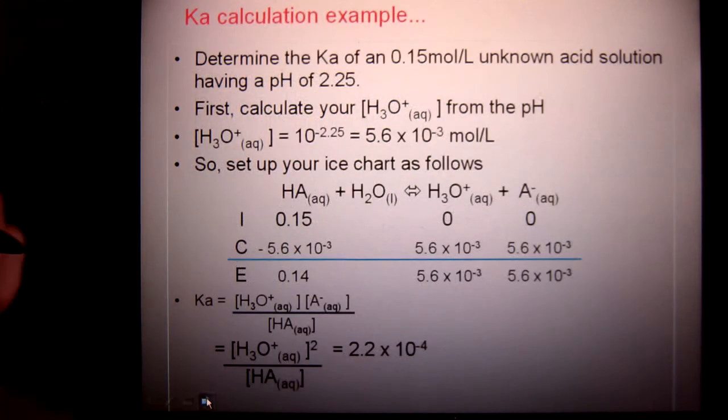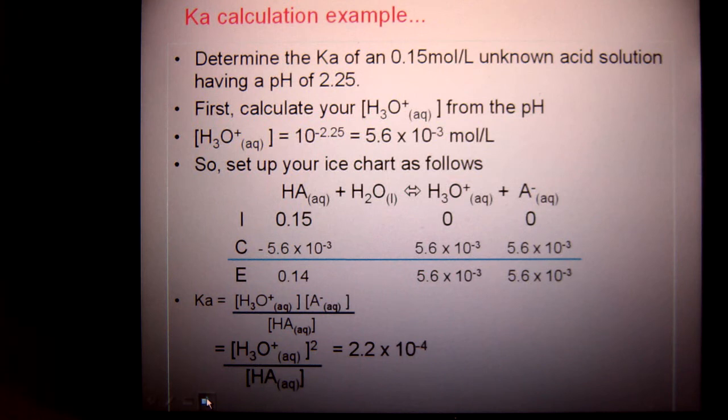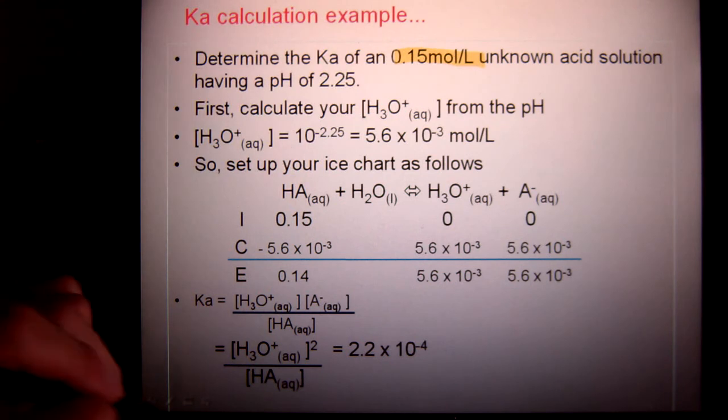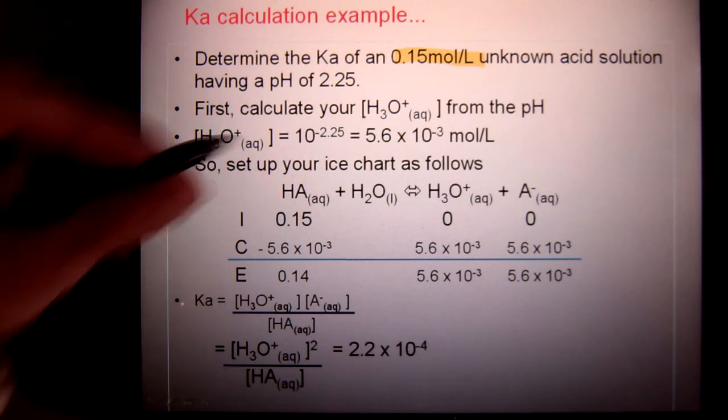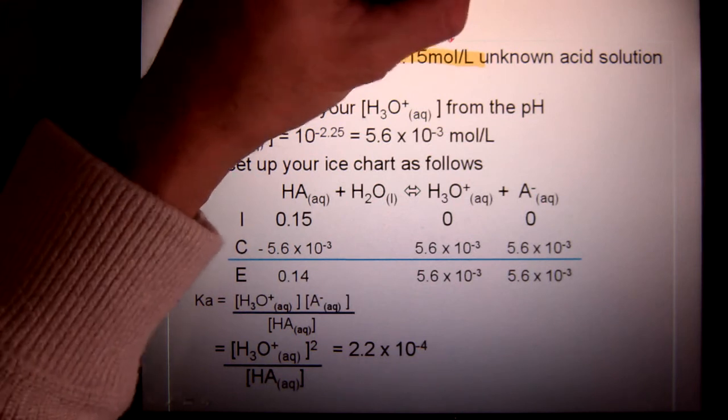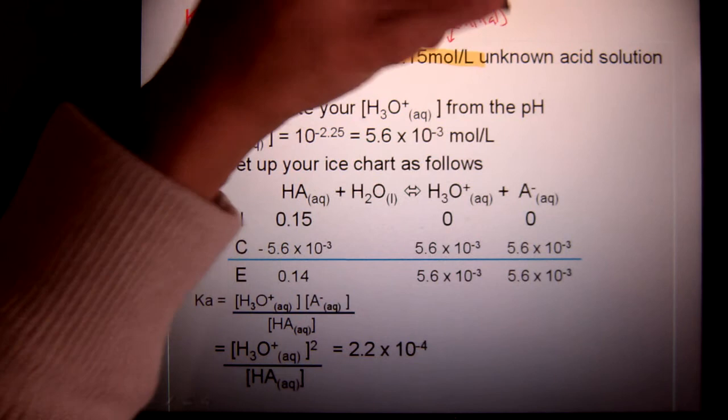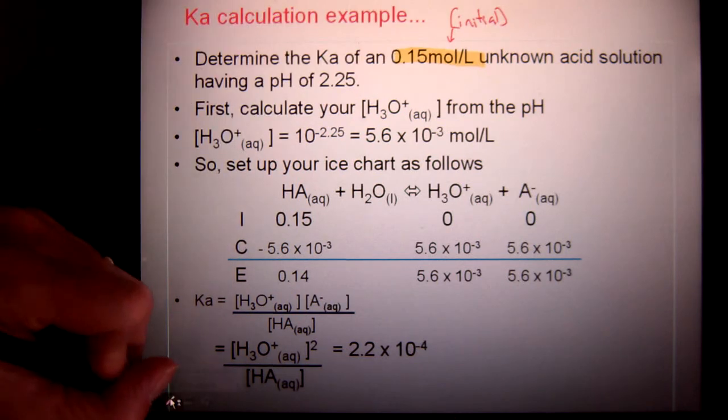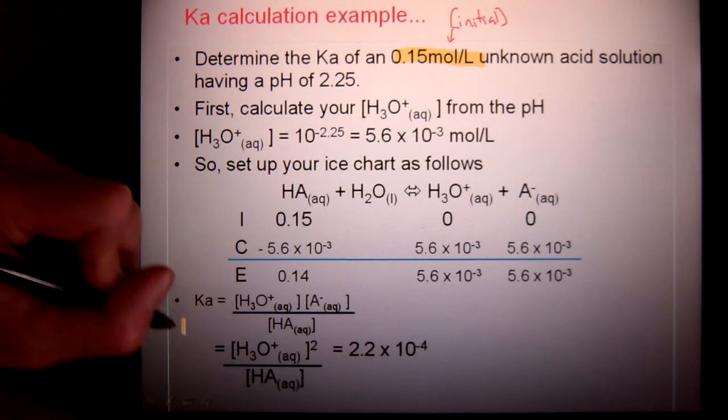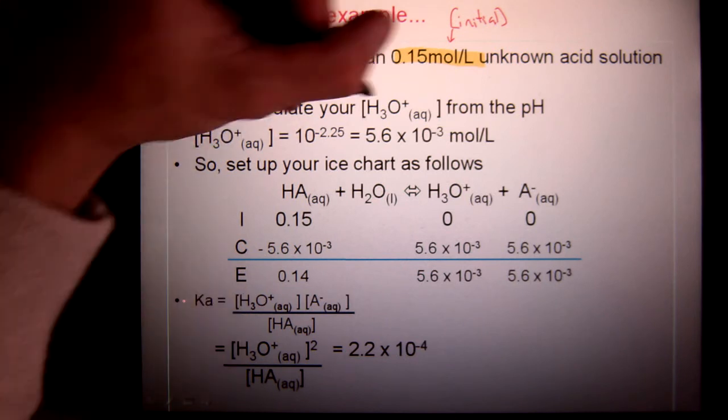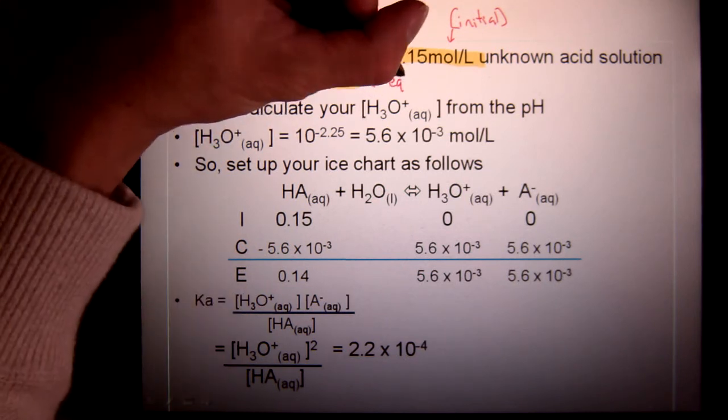As an example I want to find the Ka of some unknown acid that has a concentration of 0.15 moles per liter. This given concentration always represents initial concentration of the acid whereas the pH always represents the equilibrium concentration.